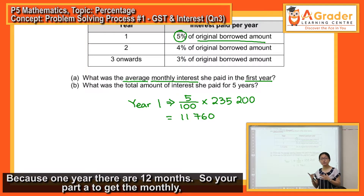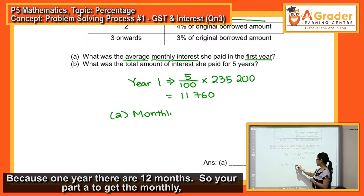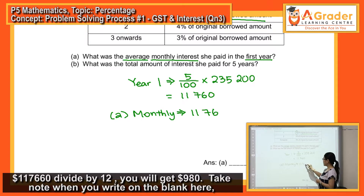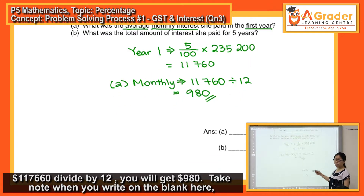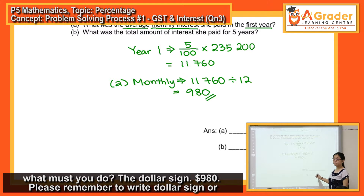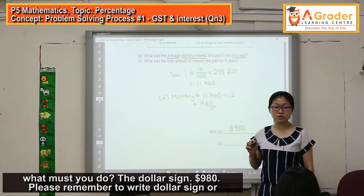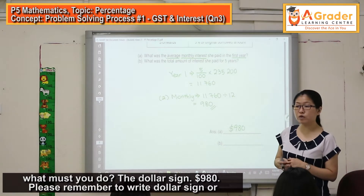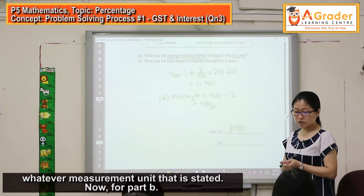To get the monthly amount, divide by 12 — because one year has 12 months. So $11,760 divided by 12 gives you $980. Take note when you write on the blank, you must include the dollar sign. So $980 — please remember to write the dollar sign, or whatever unit of measurement is stated.